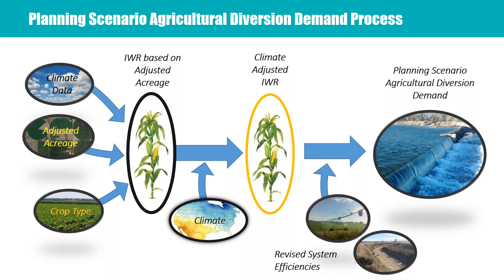So how do we put it all together? We start out with our climate data and crop types. We are making a climate adjustment to IWR, so we use current climate and current crop types and look at adjustments in acreage, developing a revised irrigation water requirement using the same consumptive use analysis tools as before. Once we have that IWR, we apply the climate projections as applicable in whichever planning scenario we have, yielding a climate-adjusted IWR. We then apply revised system efficiencies to come up with that planning scenario agricultural diversion demand. We are looking at each ditch in each water district basin-wide across five separate scenarios — there is quite a bit of data to keep track of.